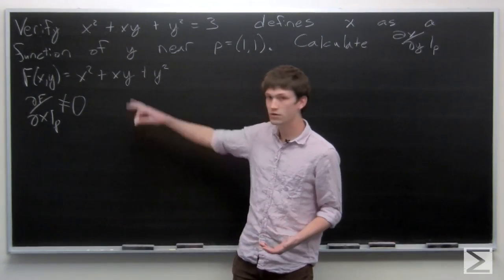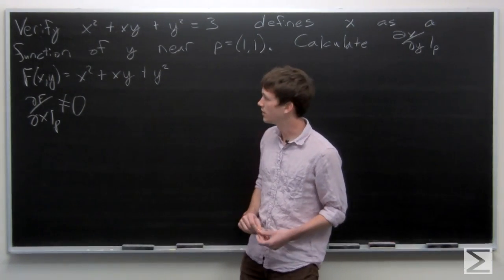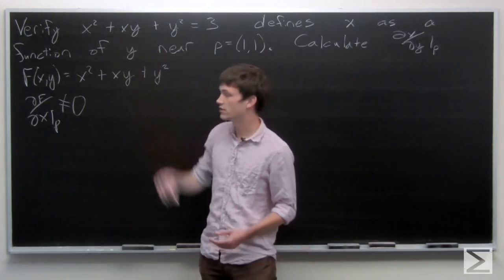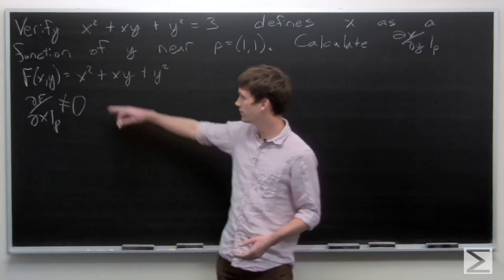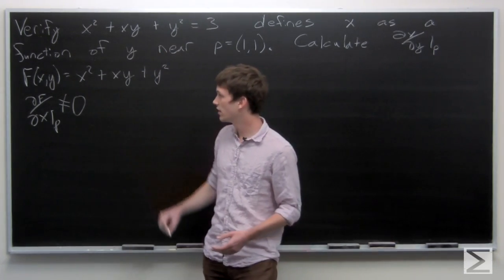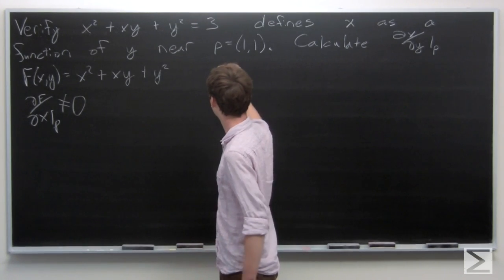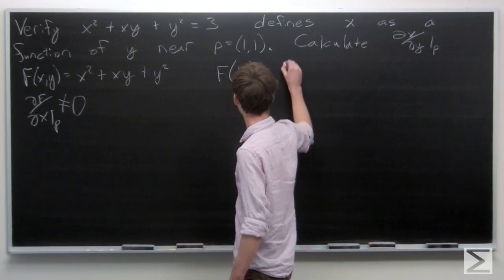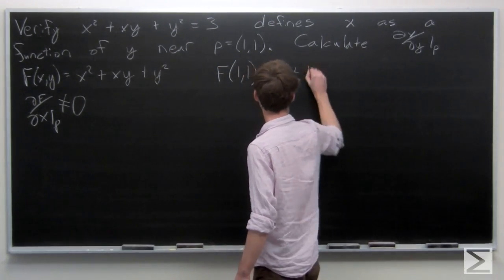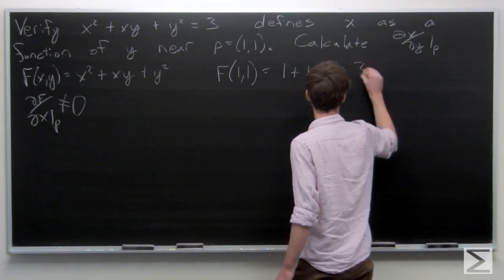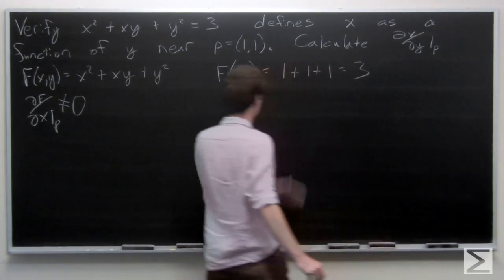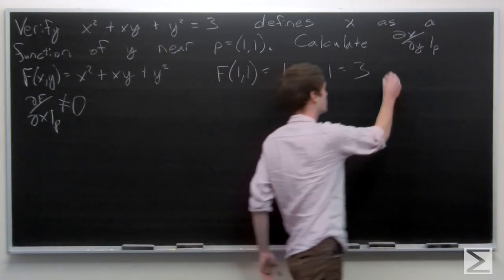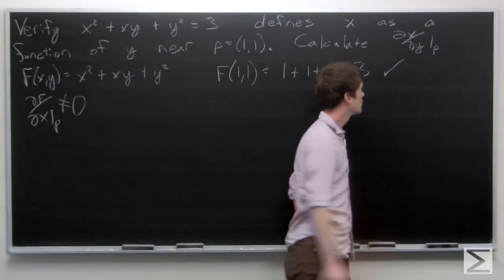First, a good check is just to make sure that our point p is actually on the level curve that we're looking at. So f of (1, 1) is equal to 3. Check.